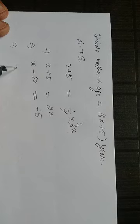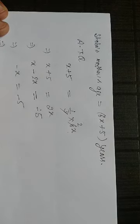That implies minus x is equal to minus 5. So minus minus cancel, x is equal to 5.